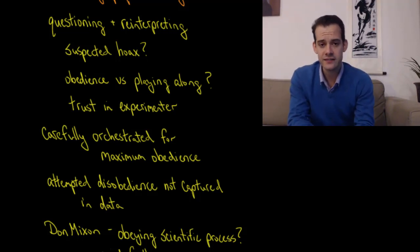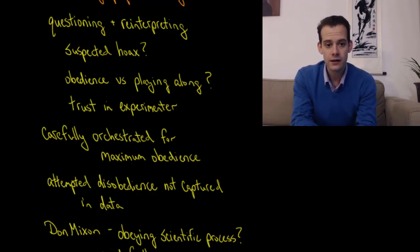On the one hand, we might think that some of the teachers suspected it was a hoax. In fact, in Milgram's own data, according to Perry in her book, as many as 50% of the participants may have had some doubts about the veracity of these electric shocks. So we might wonder how much was this obedience? And how much was it people playing along to see where things go?